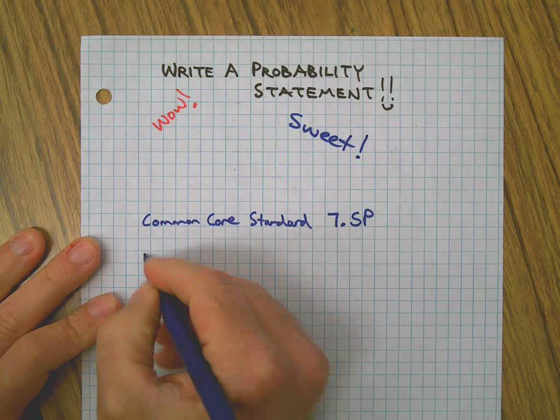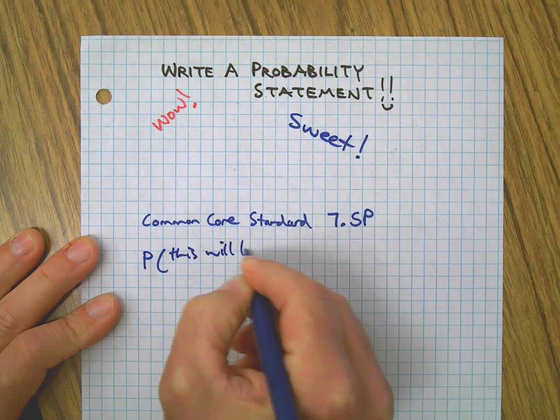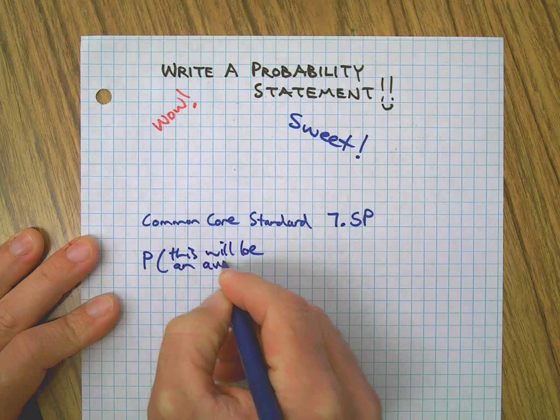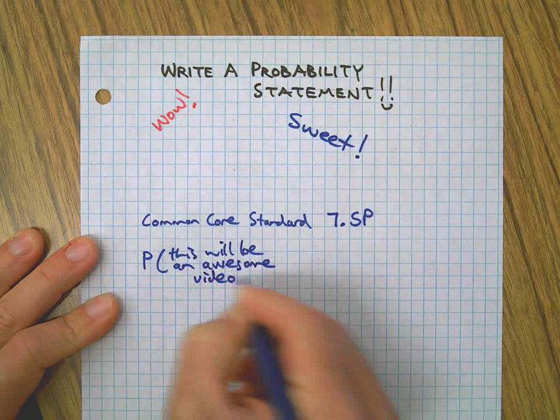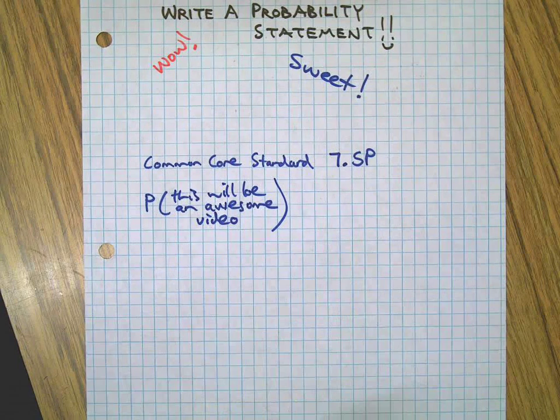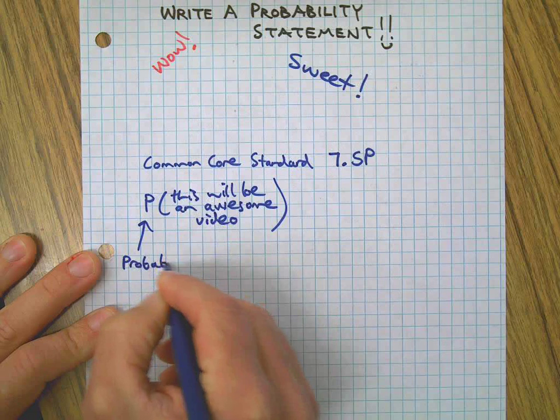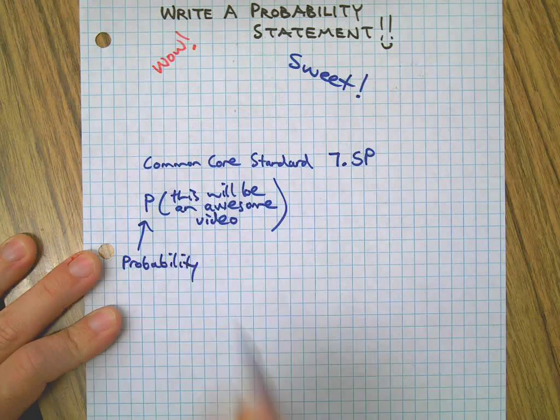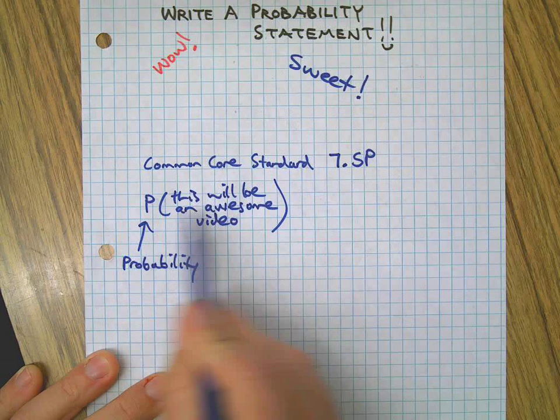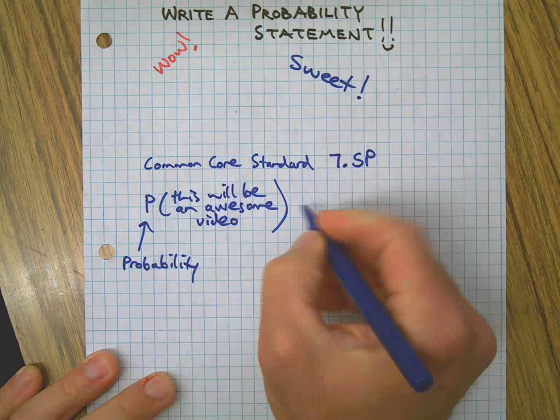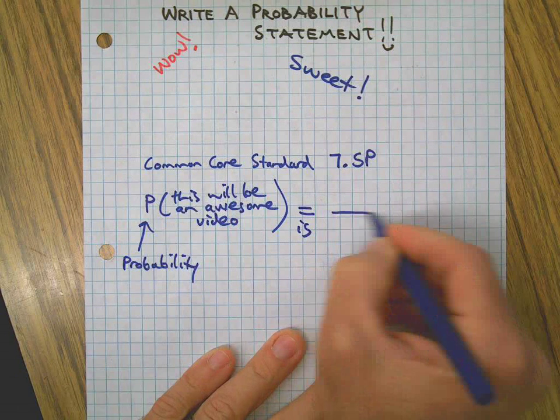To write a probability statement, you start with the capital P. I bet you already guessed what that stands for, and you're right. Then you have parentheses. So in this case, we got probability that this will be an awesome video.